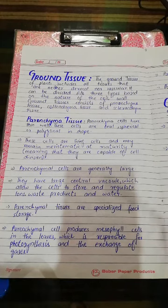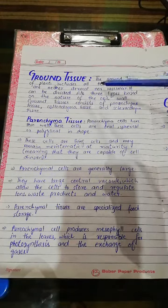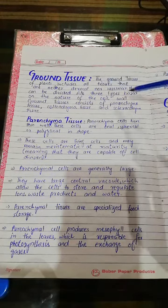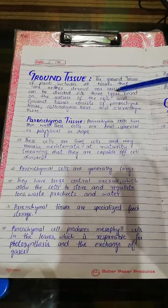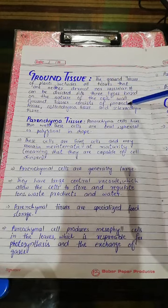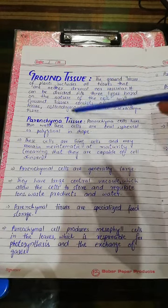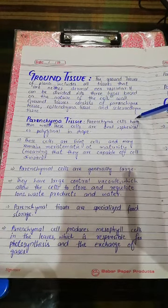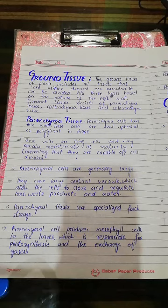Next is ground tissue. As the name indicates, ground means to give support. It is divided into three types based on the nature of cells: Parenchyma, Collenchyma, and Sclerenchyma.